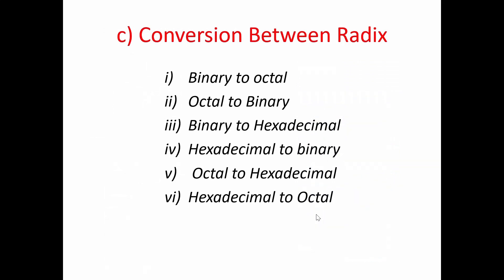Now we move to conversion between radices. We are not considering decimal here since those conversions are already done. The conversions covered are: binary to octal, octal to binary, binary to hexadecimal, hexadecimal to binary, octal to hexadecimal, and hexadecimal to octal.